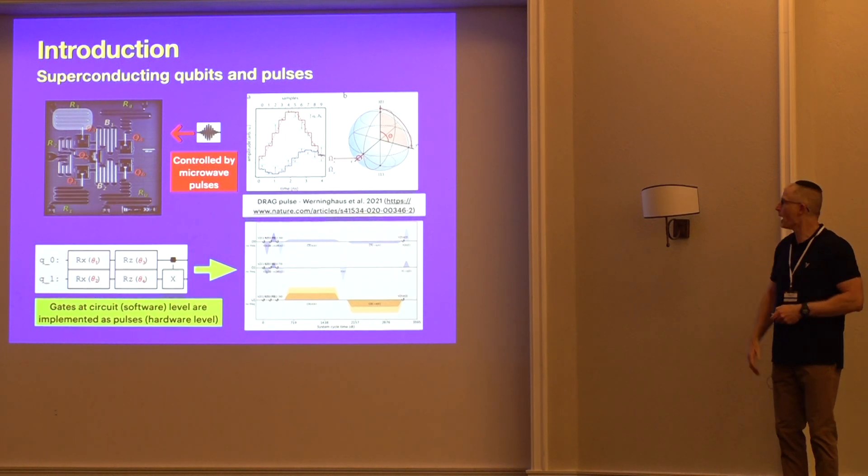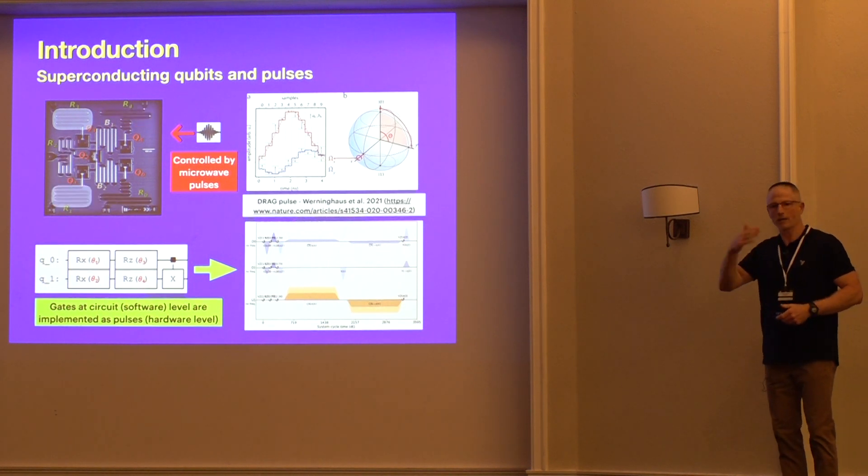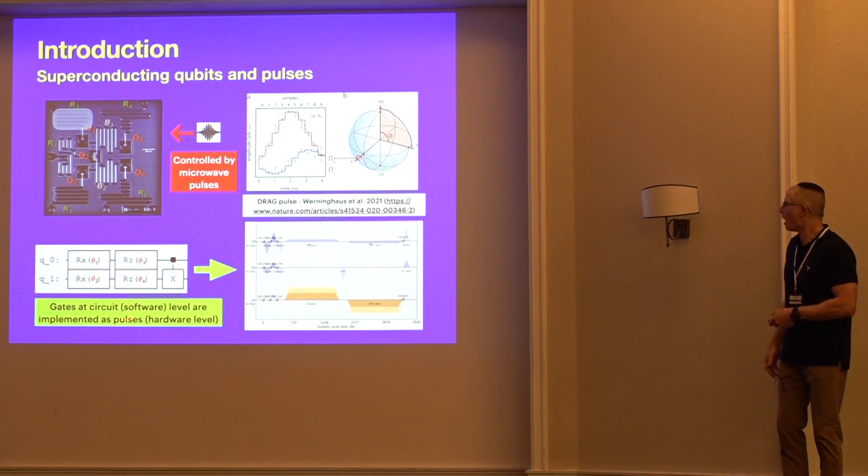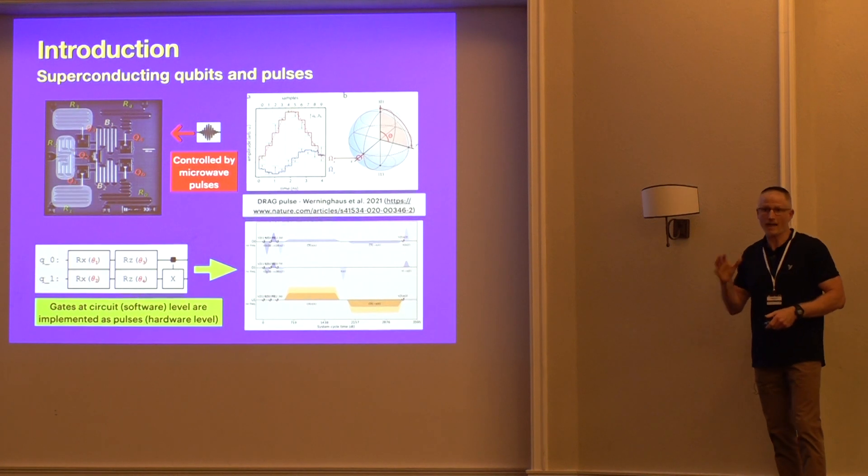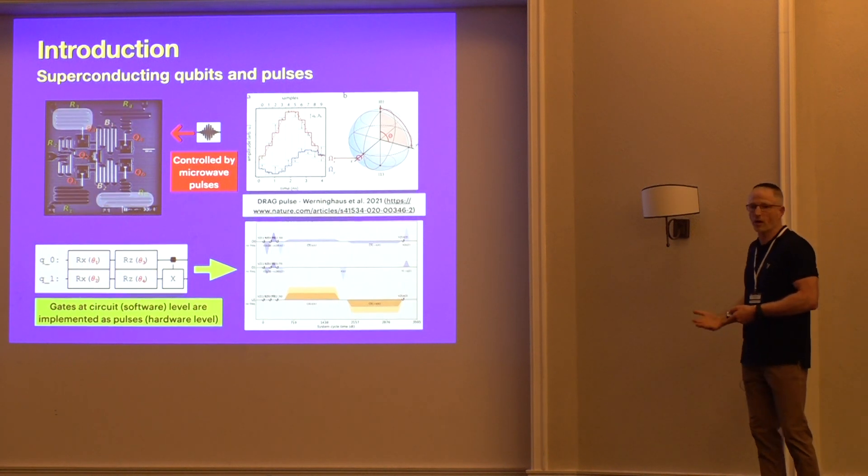This is a process where we know that when we program at the gate level, which is an abstraction, and we create a quantum circuit, these have to be transpiled and compiled down to the pulse level. So gates at the circuit level, which is the software level that we usually program in, are implemented as pulses at the hardware level. These are facts that are well known, but when you put this all together, it starts to get you thinking about some other approaches.